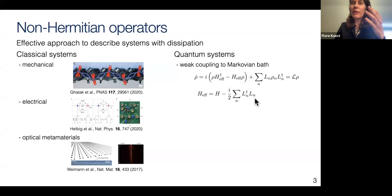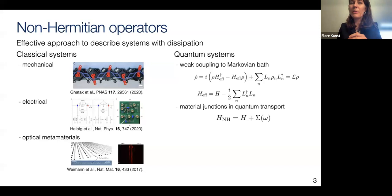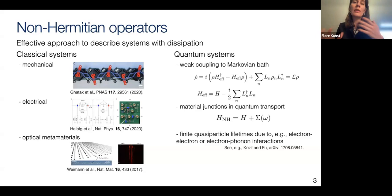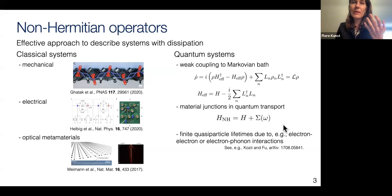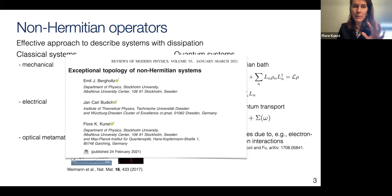Note that if you write the Lindblad equation in full, the Liouville matrix is also a non-Hermitian matrix. Another place where non-Hermitian effective Hamiltonians appear is material junctions in quantum transport, where you get self-energy corrections from the leads giving an anti-Hermitian self-energy. Similarly, finite quasi-particle lifetimes due to electron-electron or electron-phonon interactions also give self-energy corrections rendering the Hamiltonian non-Hermitian. I'd refer you to a review paper we wrote on this topic about two years ago.